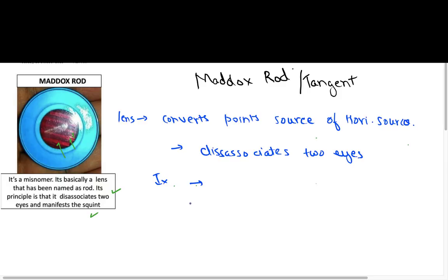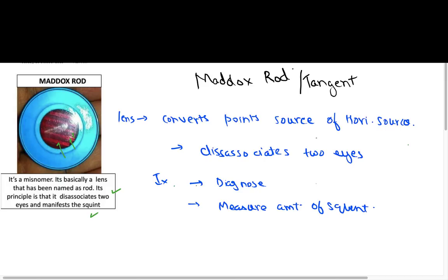It is used to diagnose phorias and also to measure the amount of squint. As you can see, there is a red color disk with several parallel grooves. It converts a point source of light — when seen through this lens — into a perpendicular source, which is horizontal to the axis of these lines.